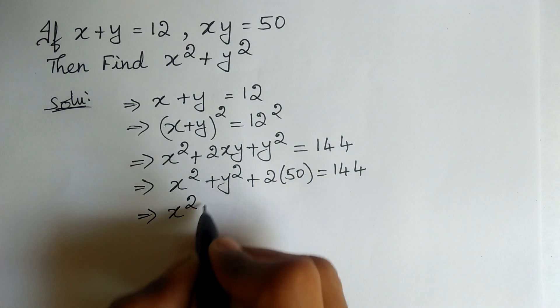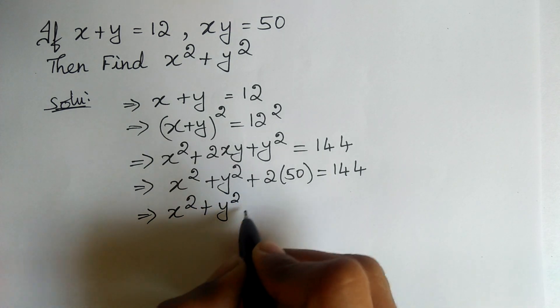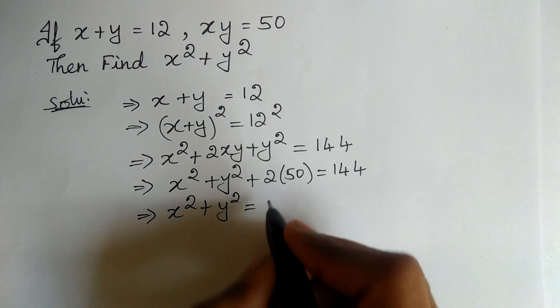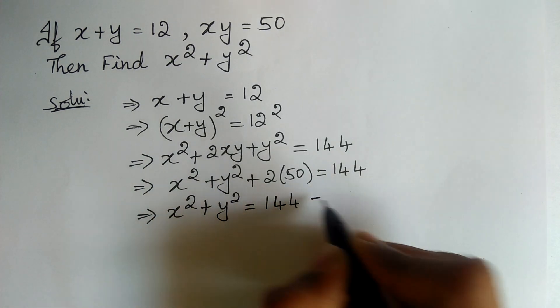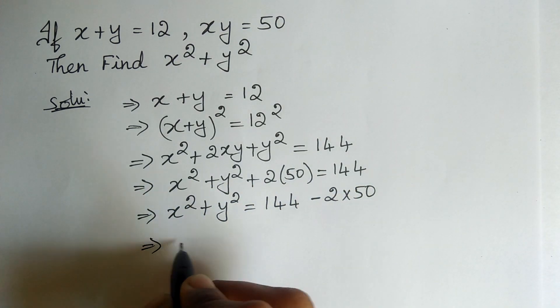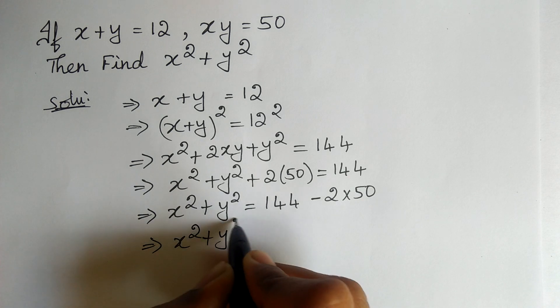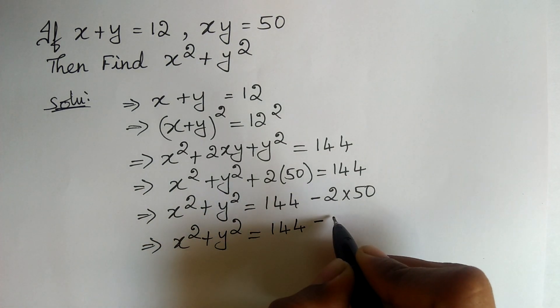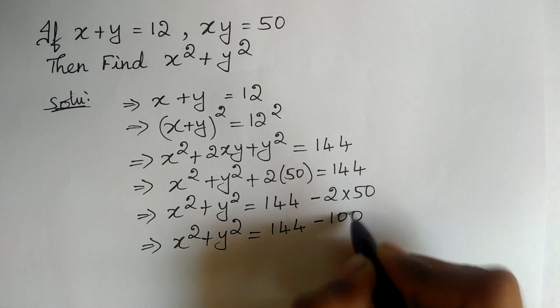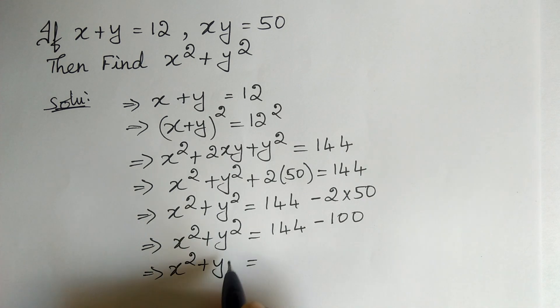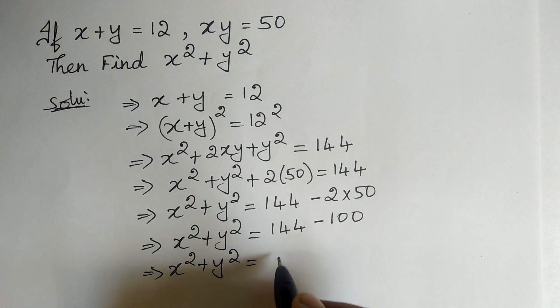Now, we got x square plus y square. Let us take 2 into 50 to the right hand side: 144 minus 2 into 50. We got x square plus y square is equal to 144 minus 2 into 50 is 100. Therefore, x square plus y square is equal to 144 minus 100 is 44.